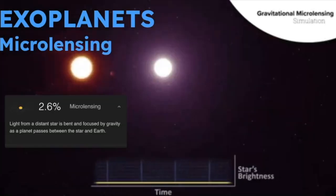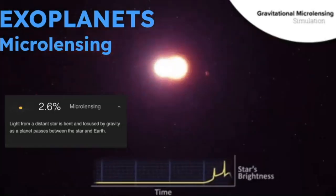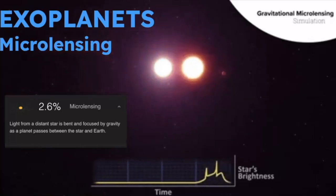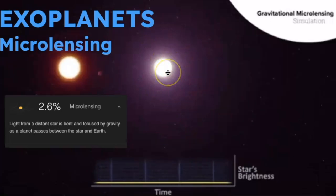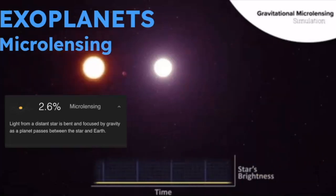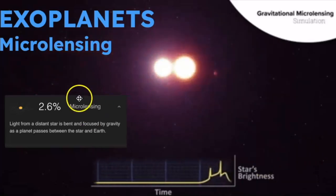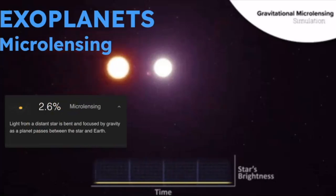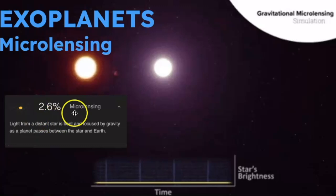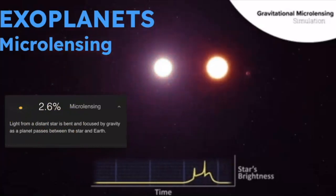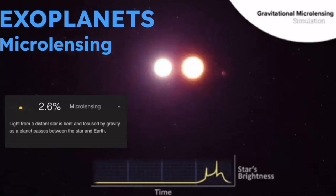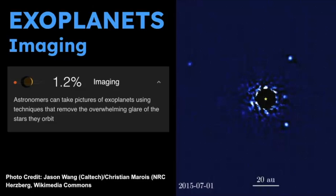The third way is through microlensing. This is when light from a distant star is bent and focused by gravity, which happens when the planet passes between the star and Earth. Here you can see two little spikes in the star's brightness. Note that only 2% of exoplanets discovered so far have been found this way, and of course these numbers keep changing as we keep finding more and more planets.